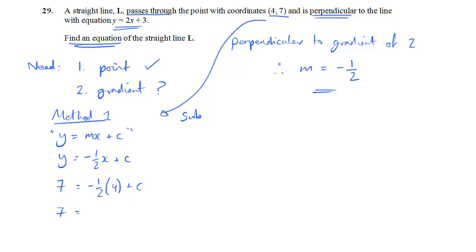And, obviously, minus 1 half times 4, be careful with that one, it's minus 2. So 7 equals minus 2 plus c, and I'm just going to add 2 to both sides to work out that c is equal to 9. So that means that my equation is y equals minus 1 half x plus 9. So that's method 1.